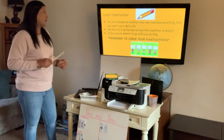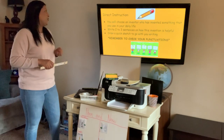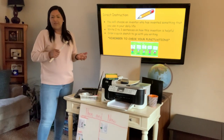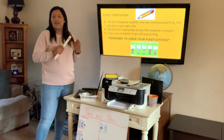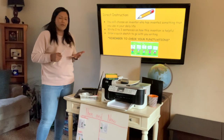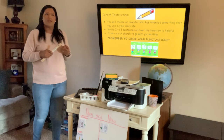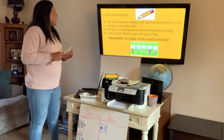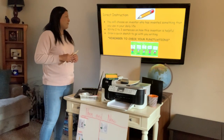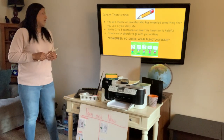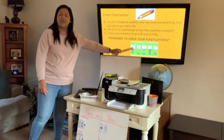Today we're going to choose an inventor that has invented something that you use in your daily lives. It can be anything like a computer, a phone, a calculator, reading a book — all of those things are inventions, something that someone created. Then we're going to write two to three sentences on how this invention is helpful. After that, we're going to draw a quick sketch to go with your writing, and we have to remember to always check your punctuation.